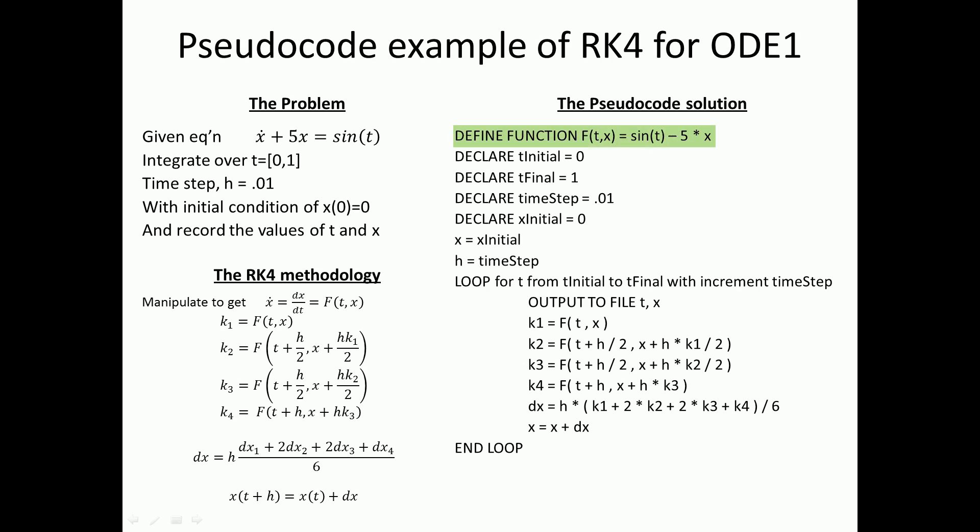So here we define a function that's a function of time and position, and it's equal to sine of t minus 5 times x. Then you declare your initial time, the final time, the time step, the initial position, and then before you start doing the iteration, you assign current position. You assign initial position to current position.